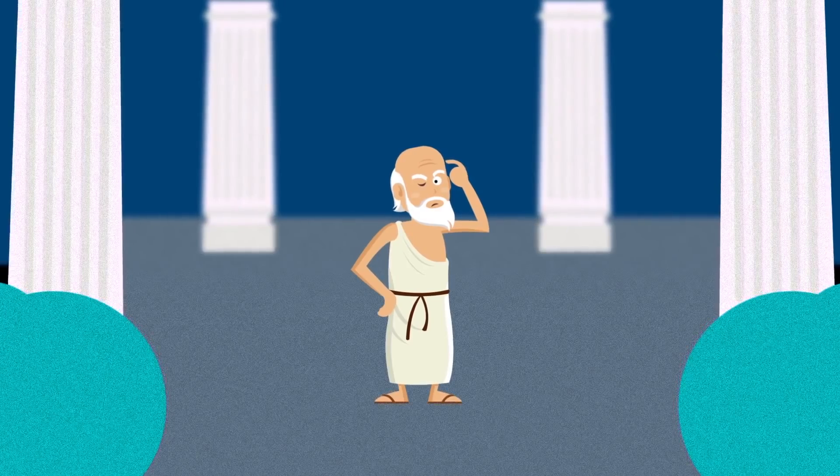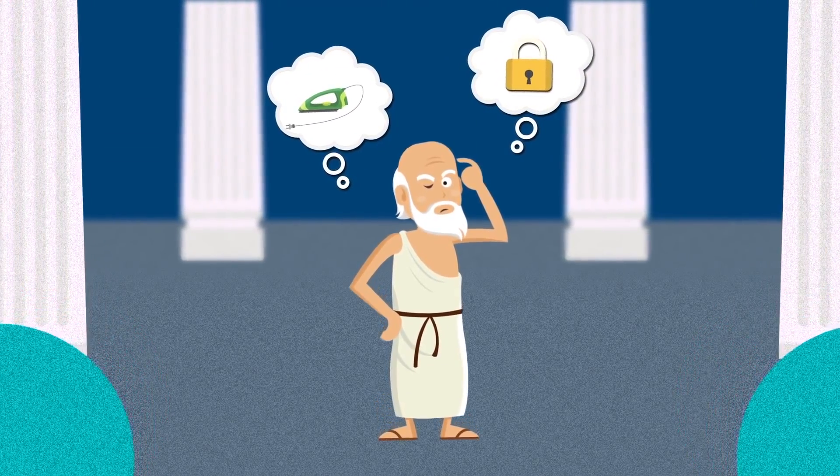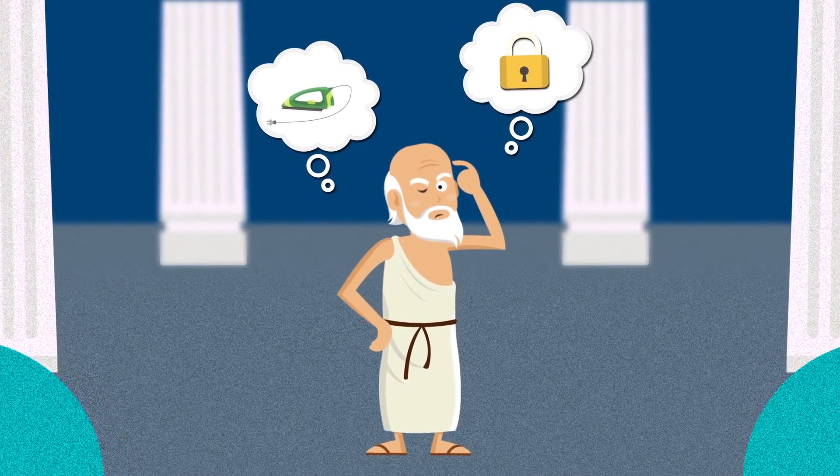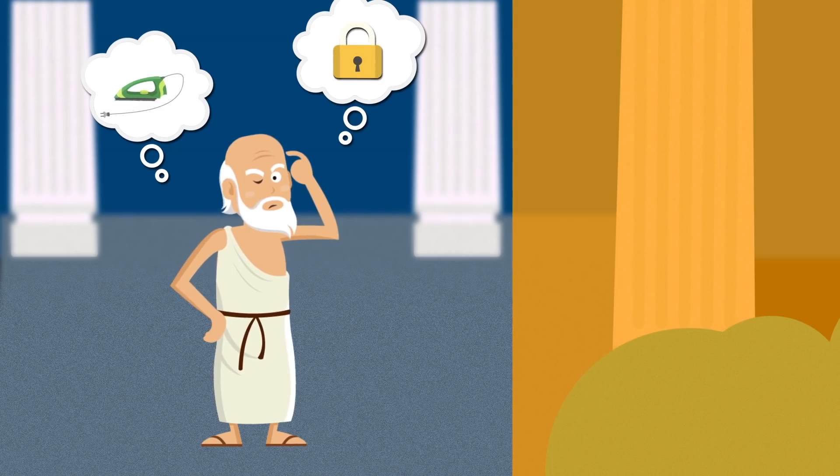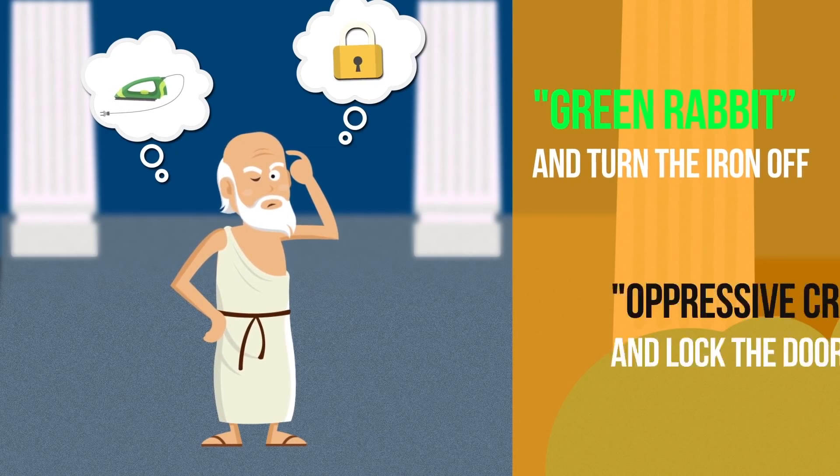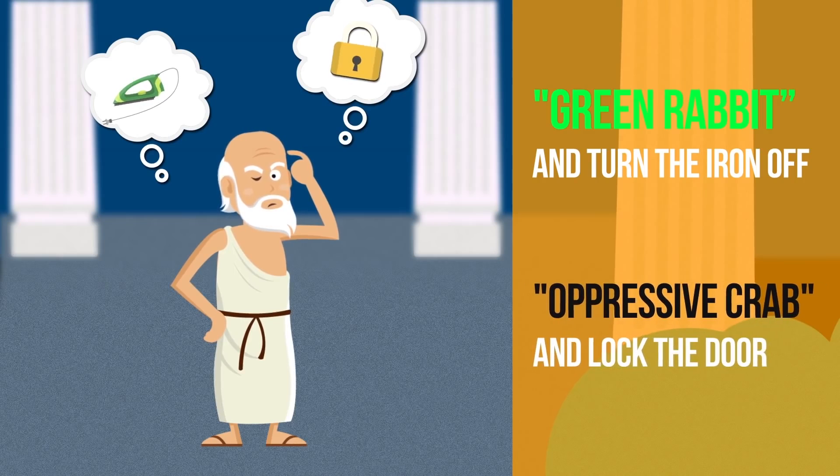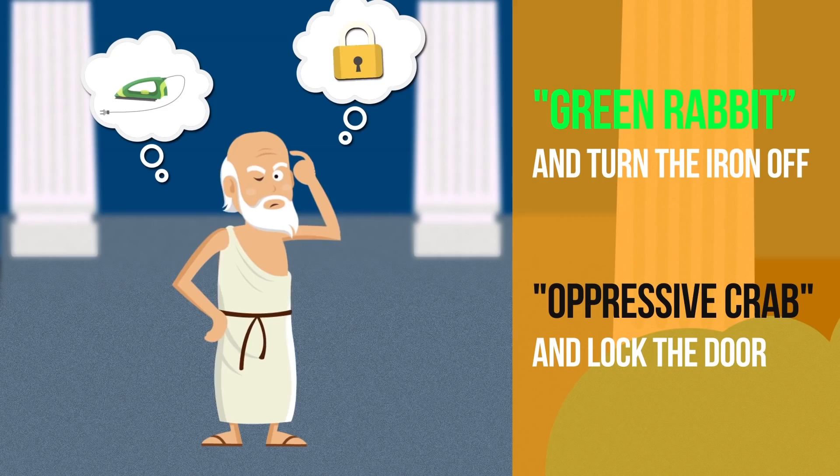Number 11. If you're always worried whether or not you locked the door or turned your iron off, just say some absolutely absurd phrase when you're doing these things. The phrase could be different every single day. For example, you say, green rabbit, and turn the iron off. Or oppressive crab, and lock the door. The next time you start doubting whether or not you did something, you'll remember saying this weird phrase, and it'll calm you down.